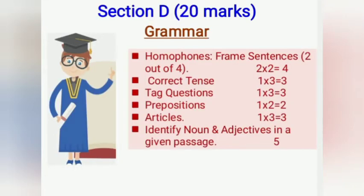From Section D you will have 20 marks, and it is the grammar section. First you have homophones — homophones means two similar-sounding words, like 'advice' and 'advise'. For homophones or sentence framing you will get four marks (two into two). You will get five pairs and from those five pairs you have to write answers for only two pairs.